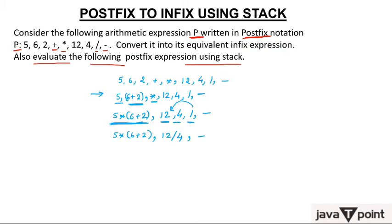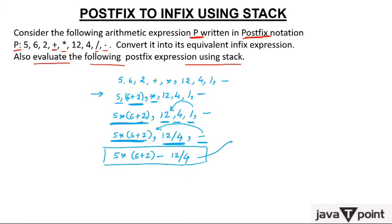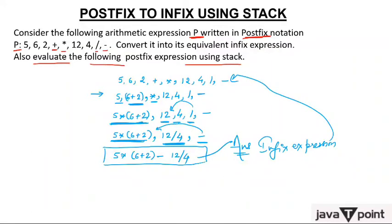Now you have one operand: 5 * (6 + 2), and a second operand: 12 / 4, with the minus operator. Put minus in between to get: 5 * (6 + 2) − 12 / 4. This is the equivalent infix expression of the given postfix expression.